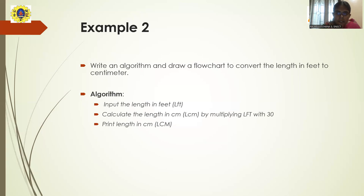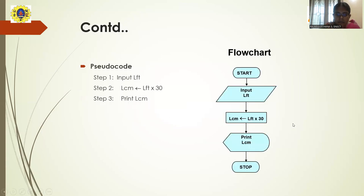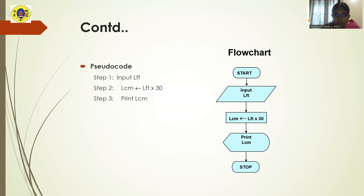To summarize the algorithm: step one is to get the input length in feet; step two is to perform the conversion by multiplying the length by 30; and step three is to print the length in centimeters. For the flowchart, it starts with the Start oval and terminates with the Stop oval. The parallelogram is used to read the input, labeled as LFT (length in feet). The rectangle box performs the operation: LCM equals LFT multiplied by 30, storing the result as the length in centimeters. Finally, the parallelogram prints the result.